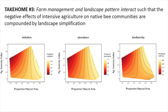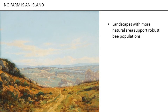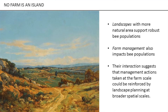So no farm is an island. Landscapes with more natural areas support robust bee populations. Farm management matters too. And their interaction suggests that management actions taken at the farm scale could be reinforced by landscape planning at broader spatial scales.